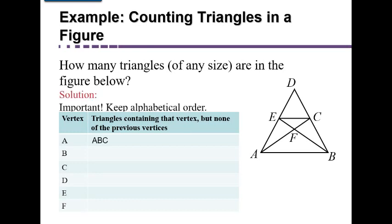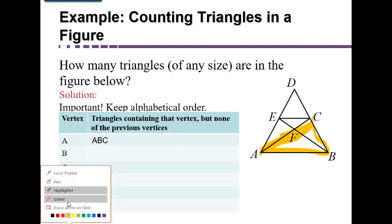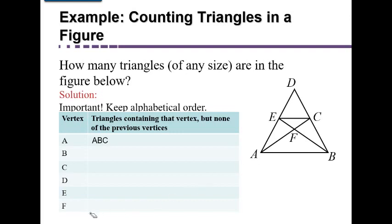Starting with A, we go to A, B, C — that would be a triangle. Next, keeping A and B, we go through all possibilities: A, B, D is also a triangle, as you can see — it's this outer triangle here, which is why we listed it.